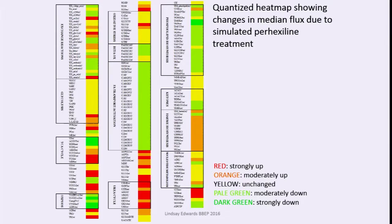This heat map shows what happened across all the reactions in the mitochondrial network when I did a simple simulation of reducing fatty acid uptake — red is up, green is down. The first thing you notice is that everything to do with fatty acid transport and activation goes down, which is great news. Glycolysis is relatively unchanged. But there is some action in and around the TCA cycle: span one of the TCA cycle was pushed down, span two was pushed up. Oxidative phosphorylation was inhibited, again as you'd expect.